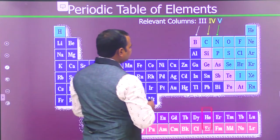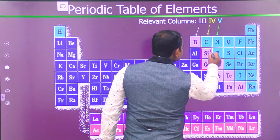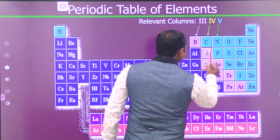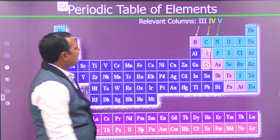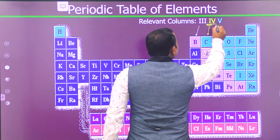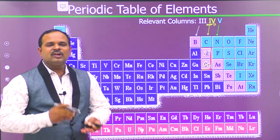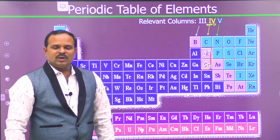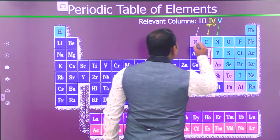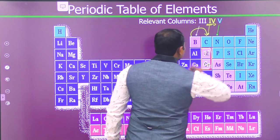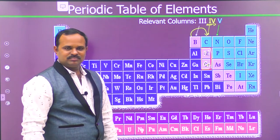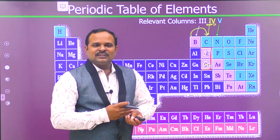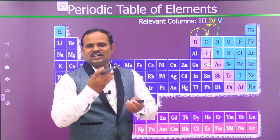As we have already discussed, silicon and germanium are the intrinsic semiconductors, and they lie in the fourth group — meaning there are four valence electrons in silicon and germanium. When we dope third group elements into fourth group elements like silicon and germanium, third group elements like boron, aluminum, gallium, and indium have three valence electrons.